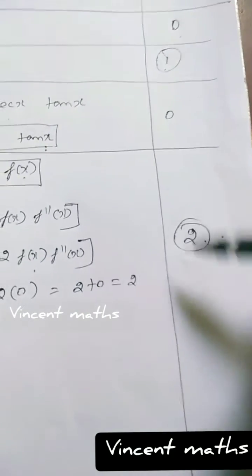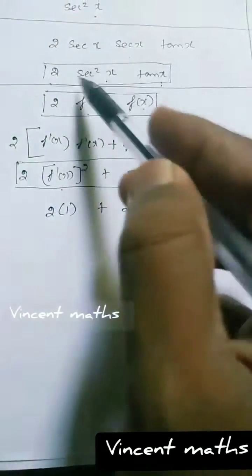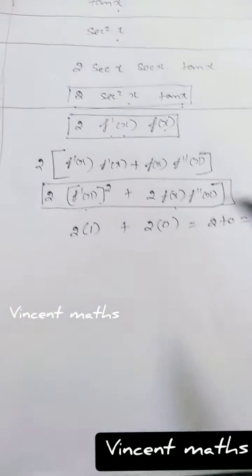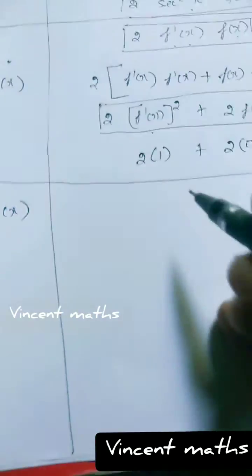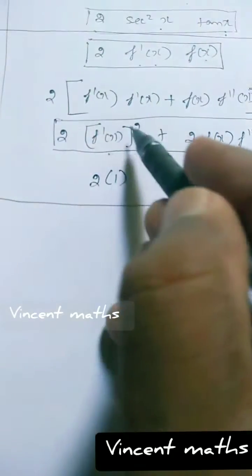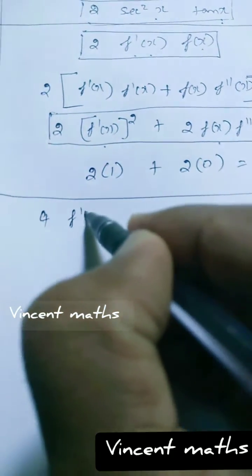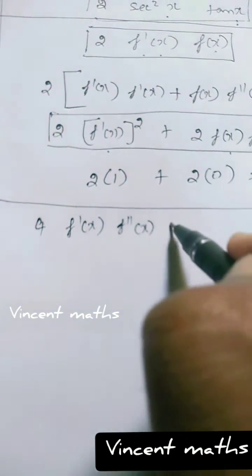So f'''(0) = 2. Now we compute f''''(x). Differentiating f'''(x) = 2·[f'(x)]² + 2·f(x)·f''(x): f''''(x) = 2·2·f'(x)·f''(x) + 2·[f'(x)·f''(x) + f(x)·f'''(x)]. This gives f''''(x) = 4·f'(x)·f''(x) + 2·f'(x)·f''(x) + 2·f(x)·f'''(x). We substitute at x = 0: f'(0) = 1, f''(0) = 0, f(0) = 0.